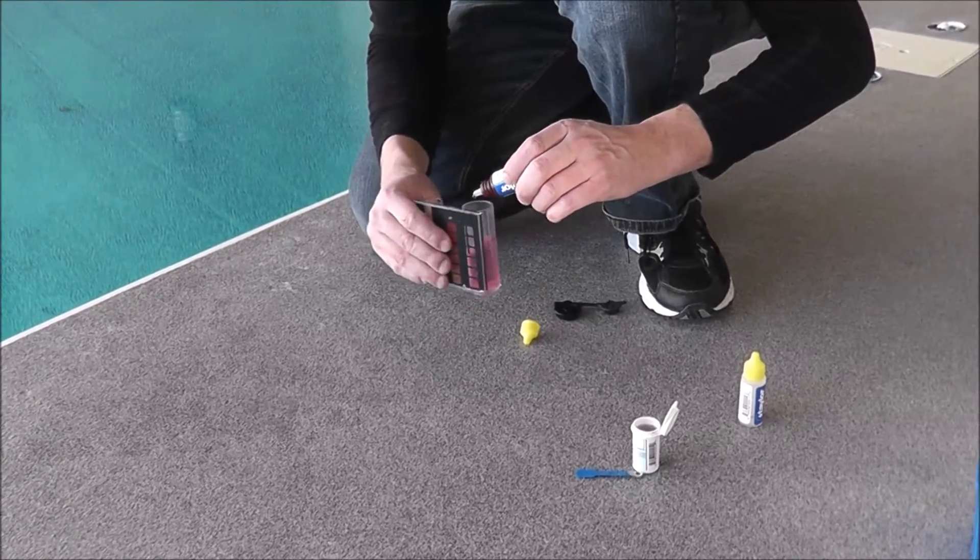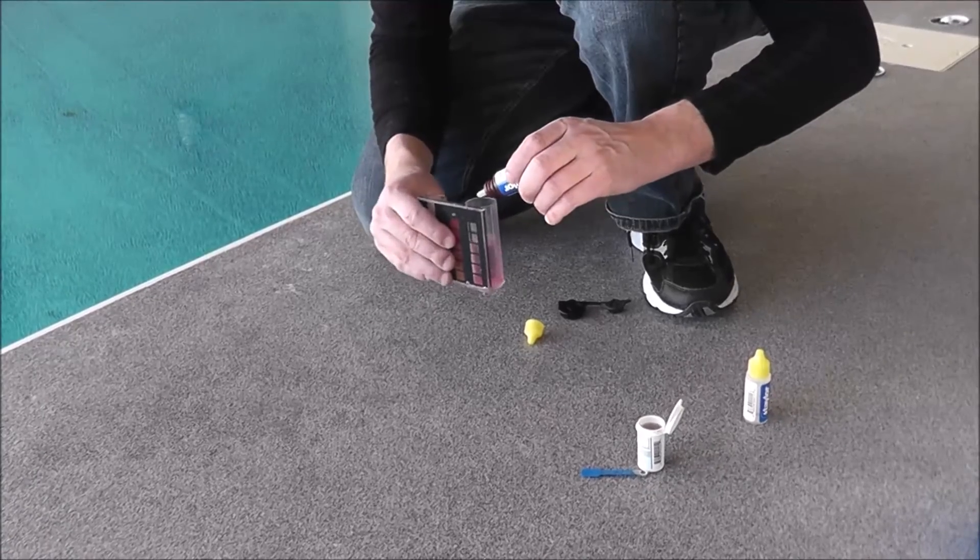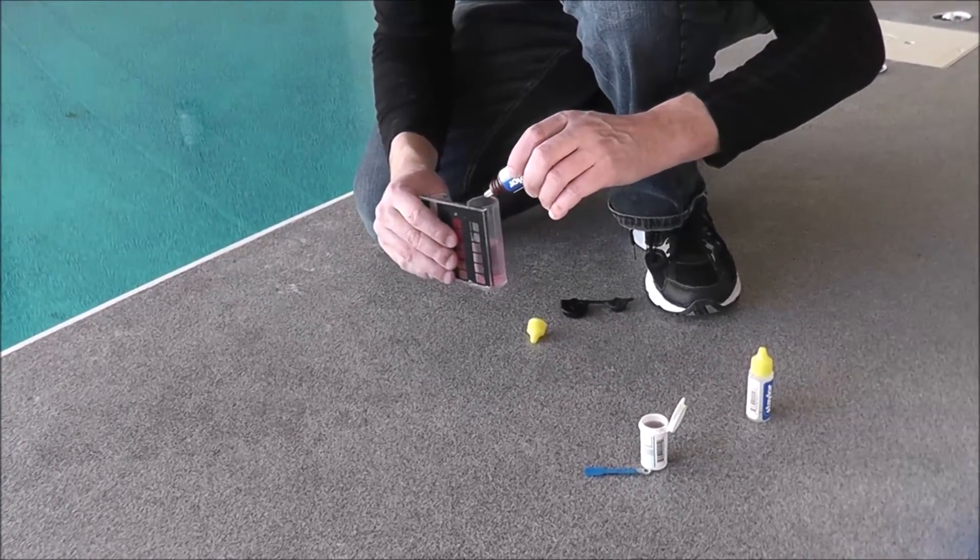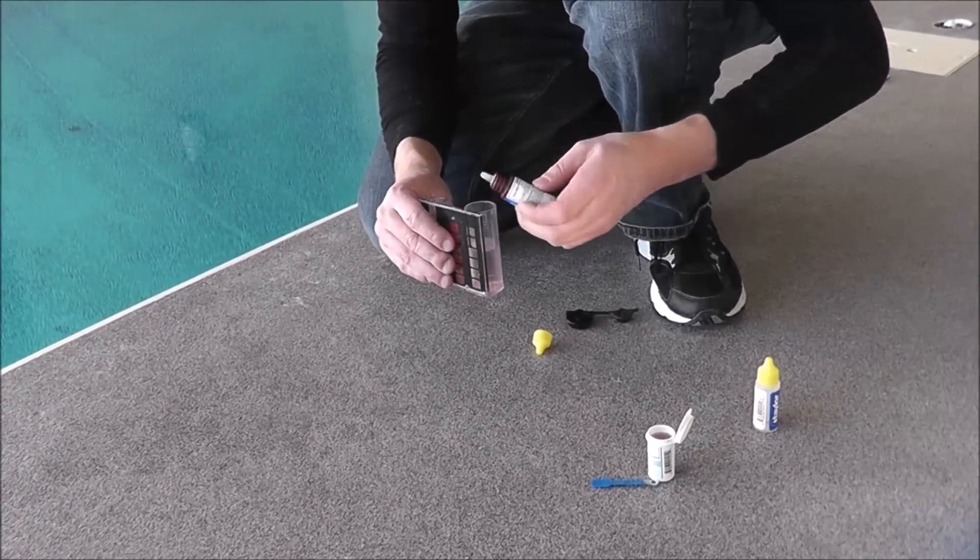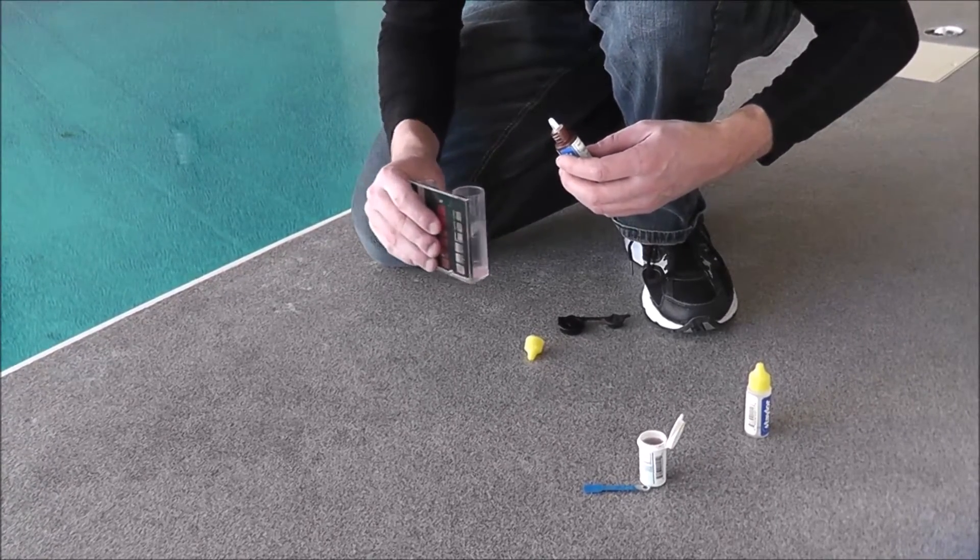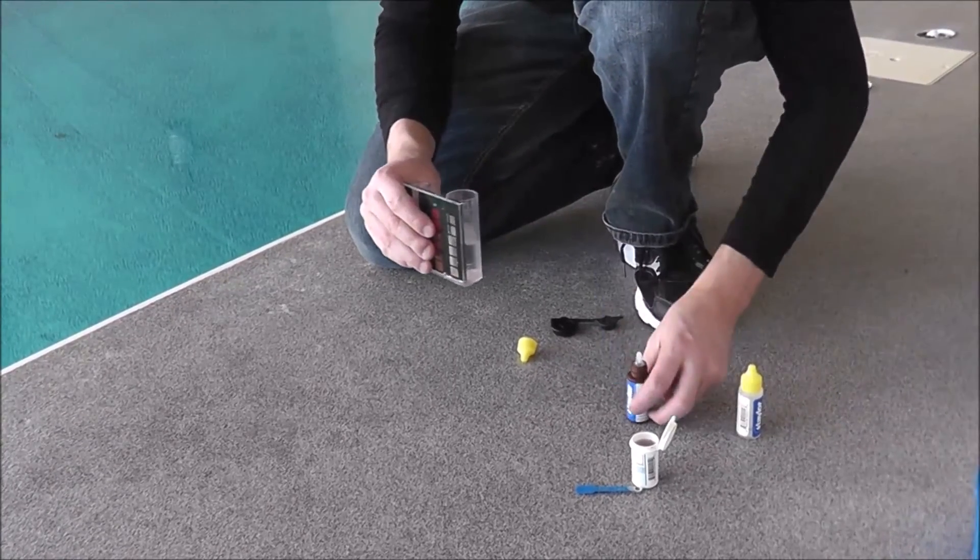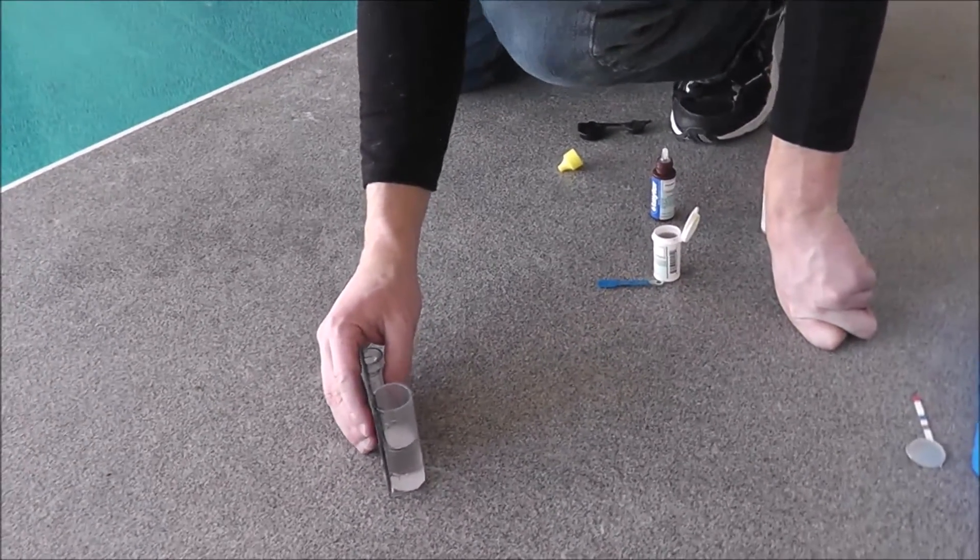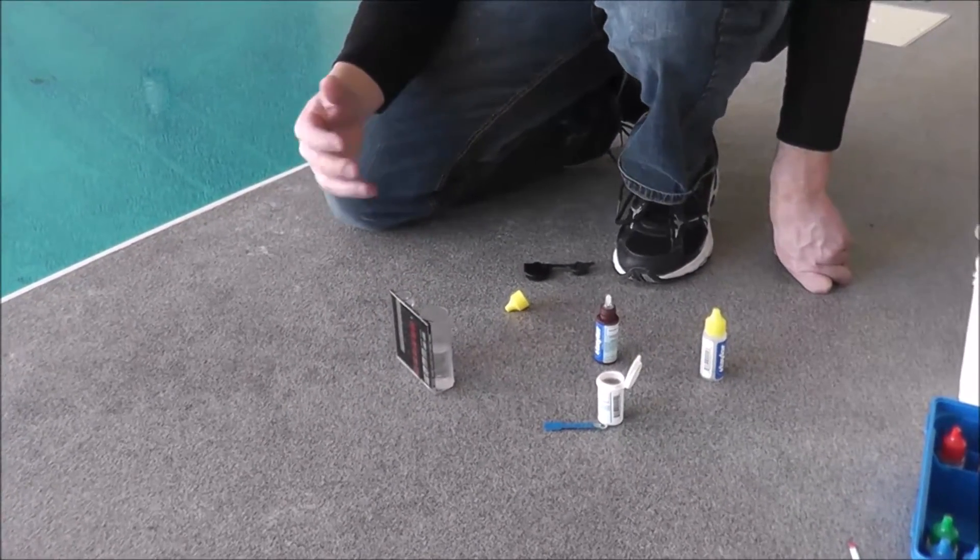So that's 0.4, 0.6, 0.8, 1 part per million, 1.2 parts per million, 1.4 parts per million, 1.6 parts per million. You can see the sample here has turned completely clear. There's no pink to it. So we have 1.6 parts per million of chlorine. That's within the acceptable range of one to three.